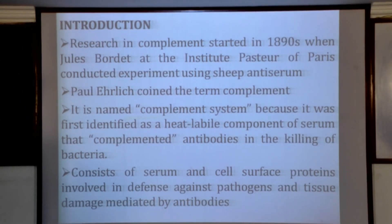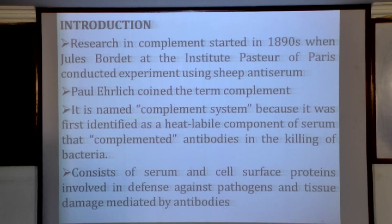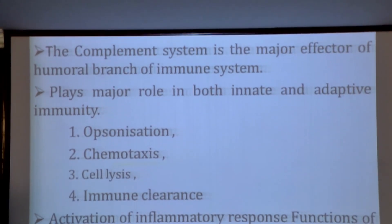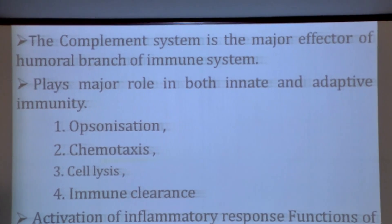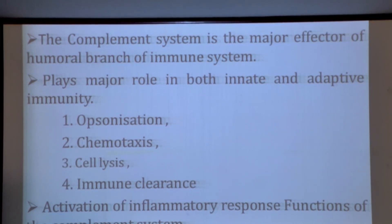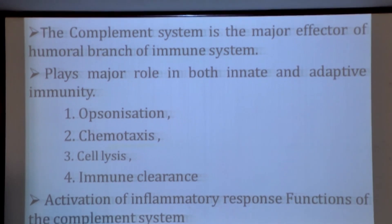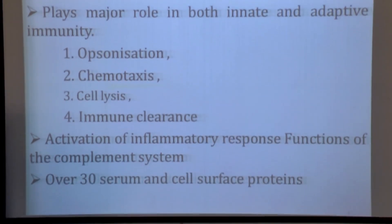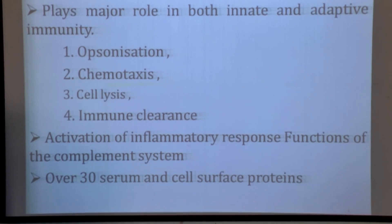The complement system consists of serum and cell surface proteins involved in defense against pathogens and tissue damage mediated by antibodies. It is the major effector of the humoral branch of the immune system, playing a major role in both innate and adaptive immunity, including opsonization, chemotaxis, cell lysis, immune clearance, and activation of inflammatory responses.